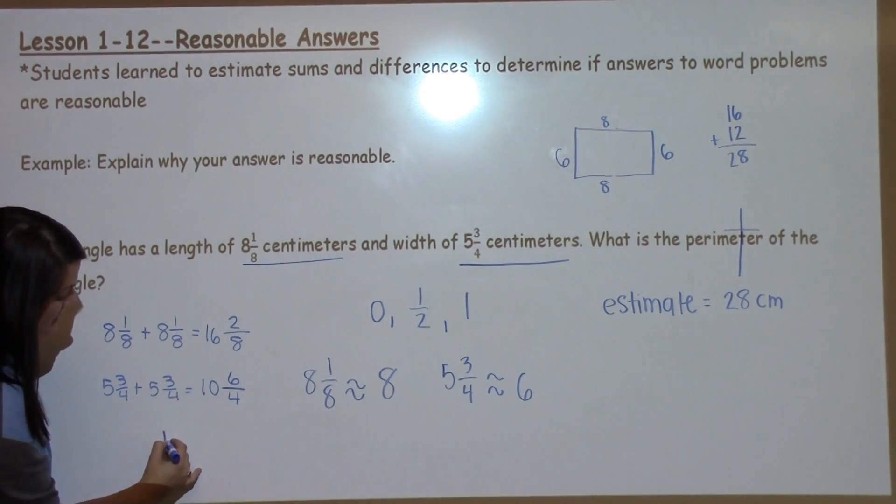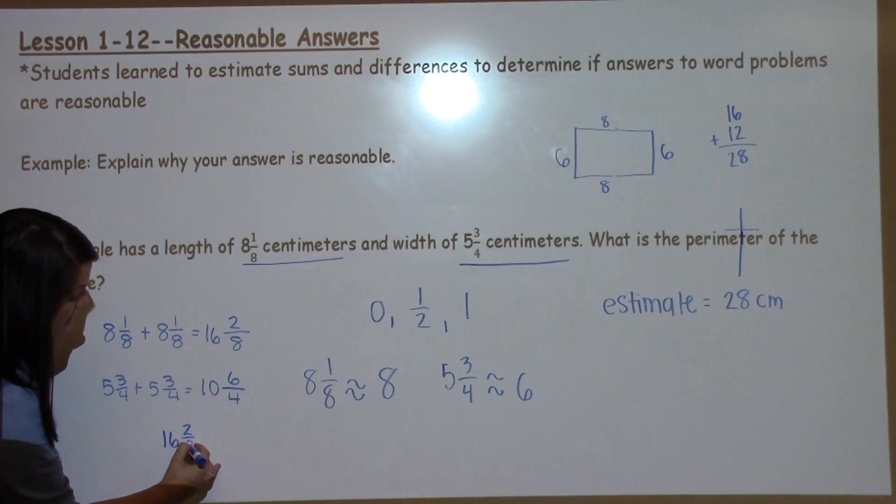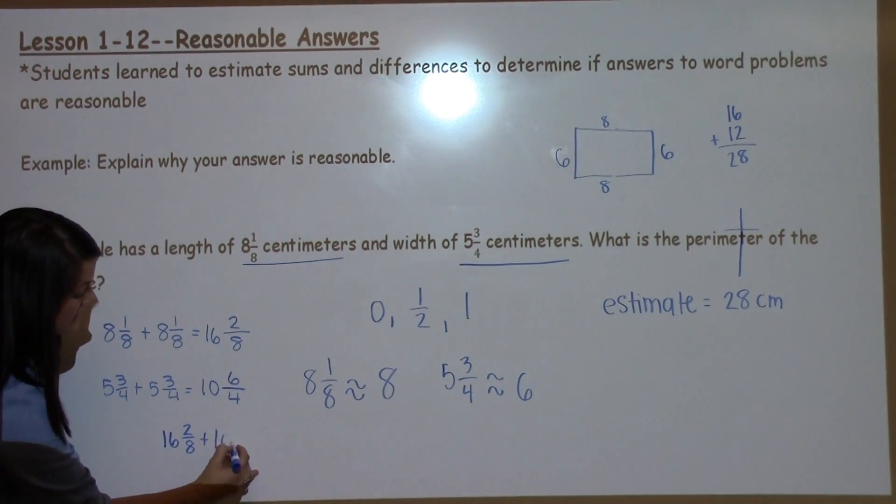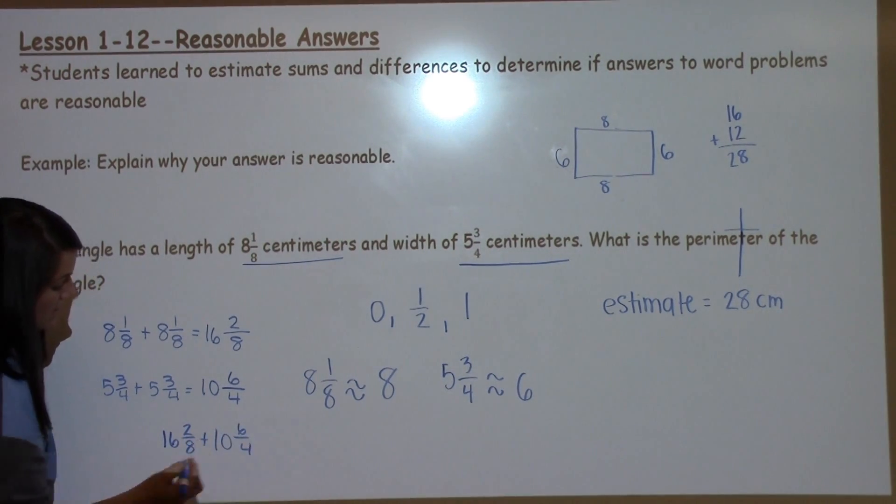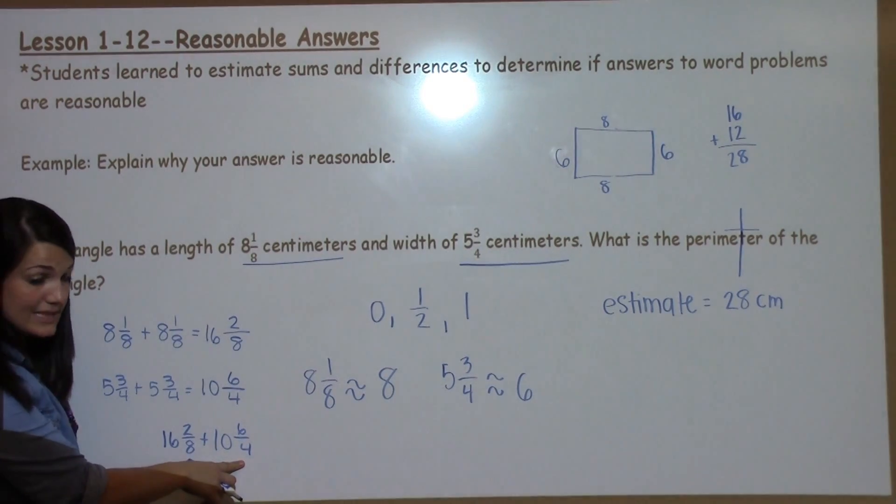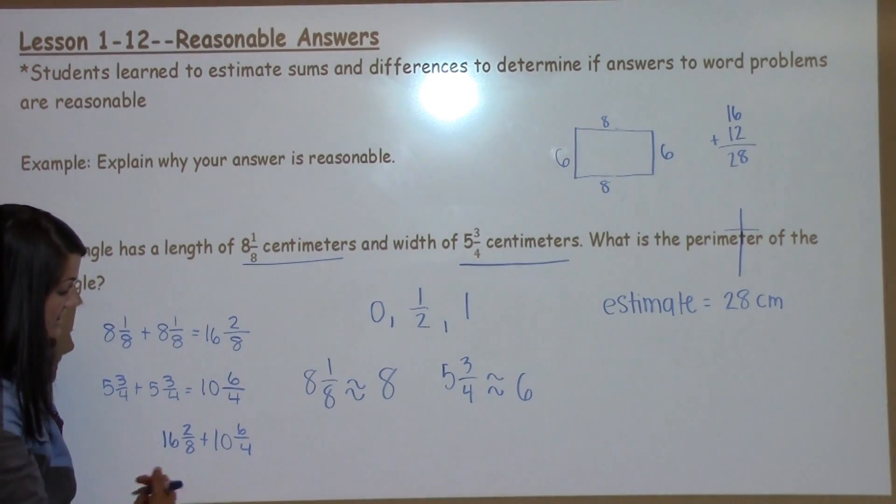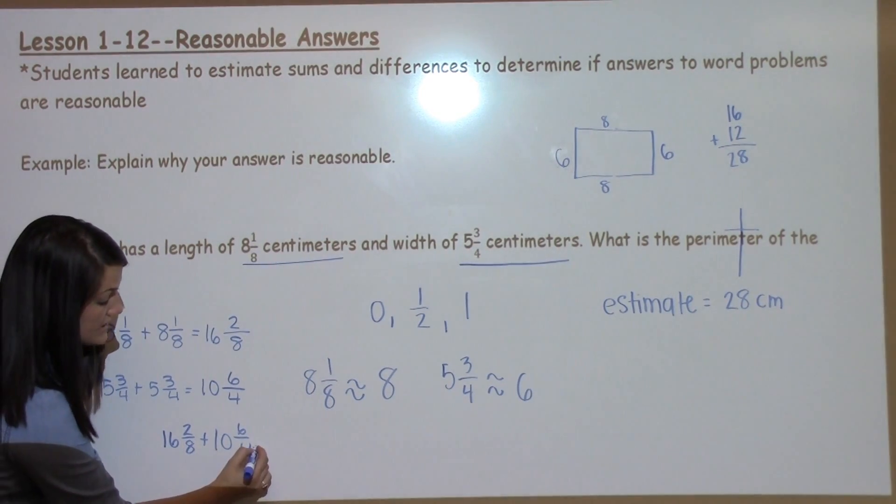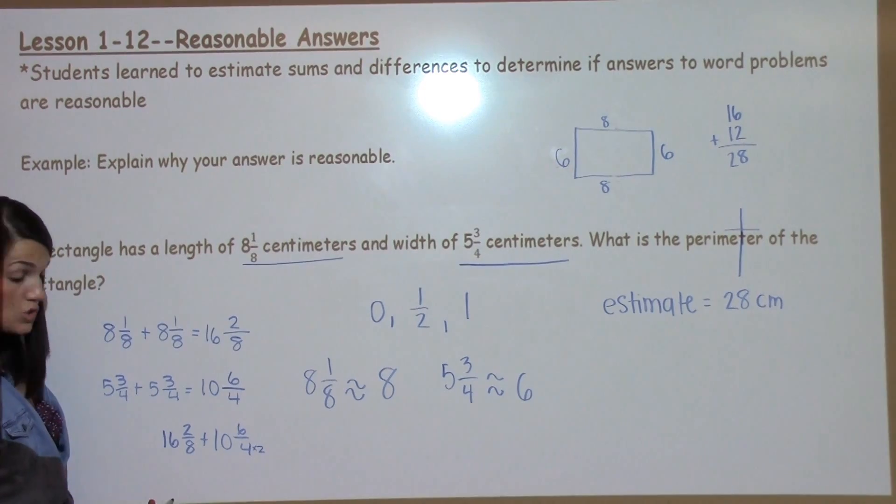So now I need to take 16 and 2/8 plus 10 and 6/4. These denominators are not the same, so I have to use a strategy to make them the same. I see that there's something I could do to the 4 to make it an 8, which is times 2. So I'm going to use the shortcut strategy.